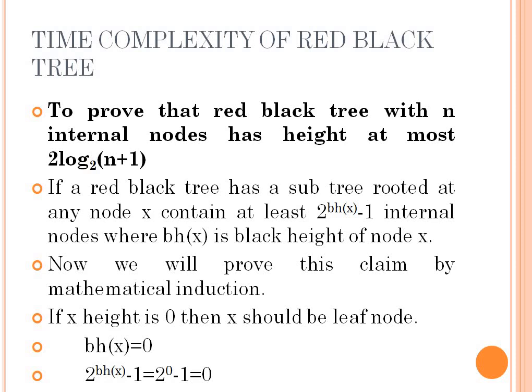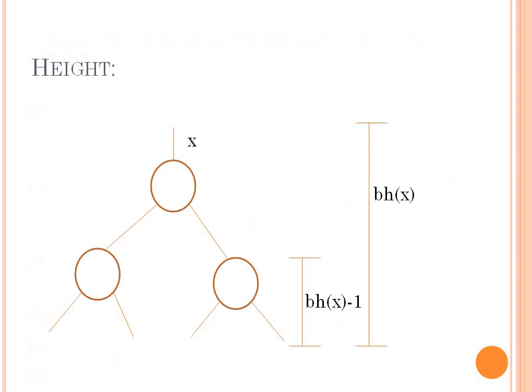We will prove this claim by mathematical induction. If x has height 0, then x should be a leaf node and bh(x) is equal to 0. So the black height is 0, meaning there are no internal nodes in the subtree. We get 2^bh(x) minus 1 = 2^0 minus 1 = 0, so we have no internal nodes.